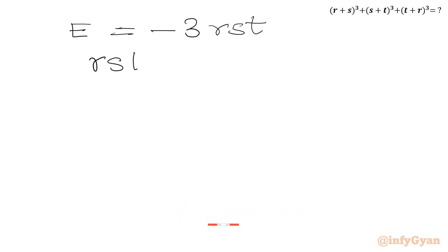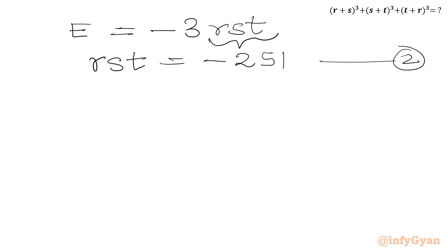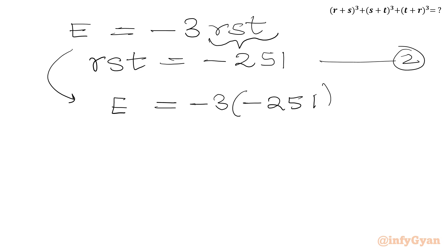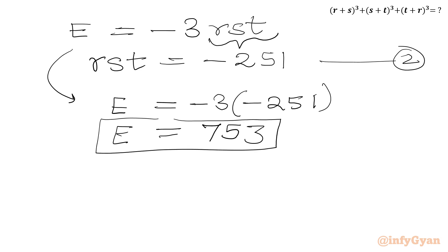Equation 2 gives rst = −251. Substituting: e = −3 × (−251). Minus times minus becomes plus, so e = 3 × 251 = 753. Our answer is 753.